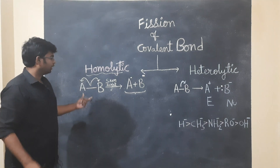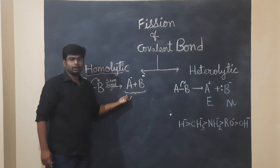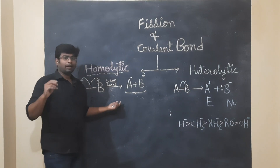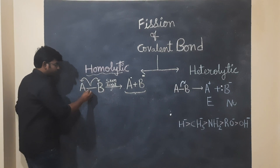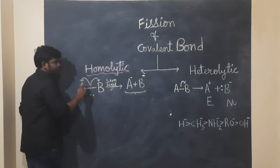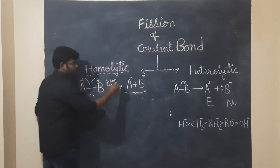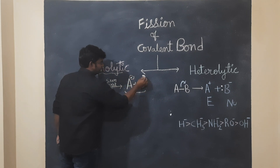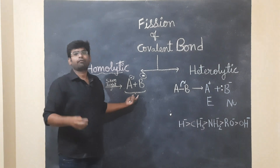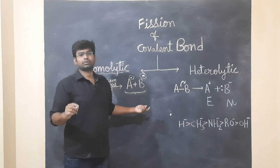We have radicals. We have to break the bond between the two atoms A and B. If we don't have a shared electron transfer, we break between A and B. If we break these, we have free radicals.